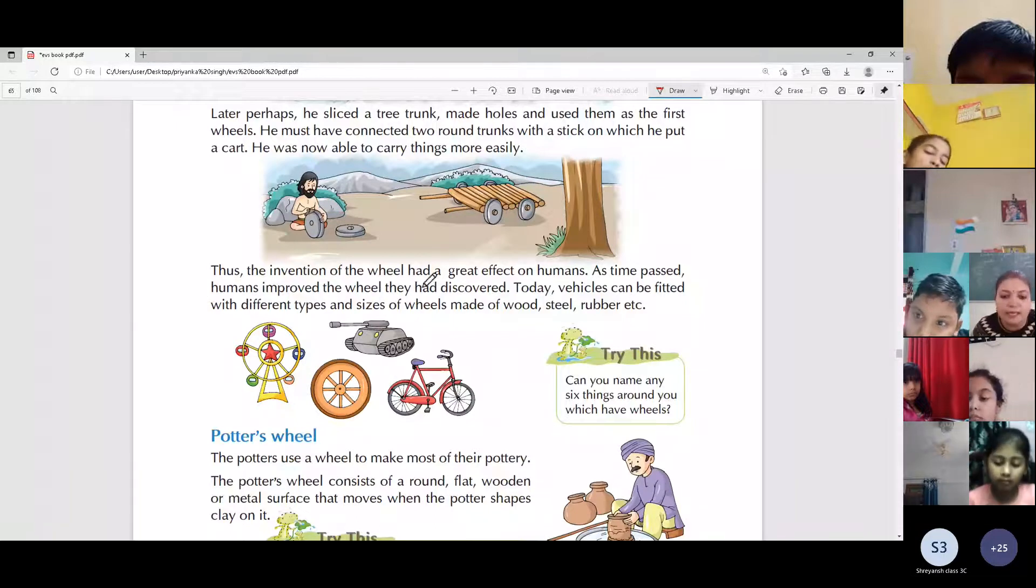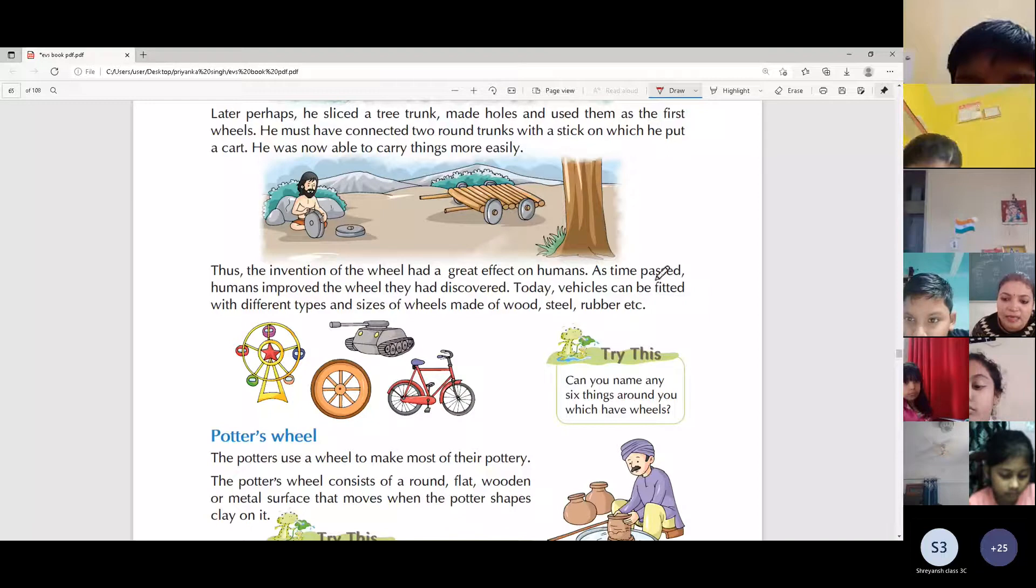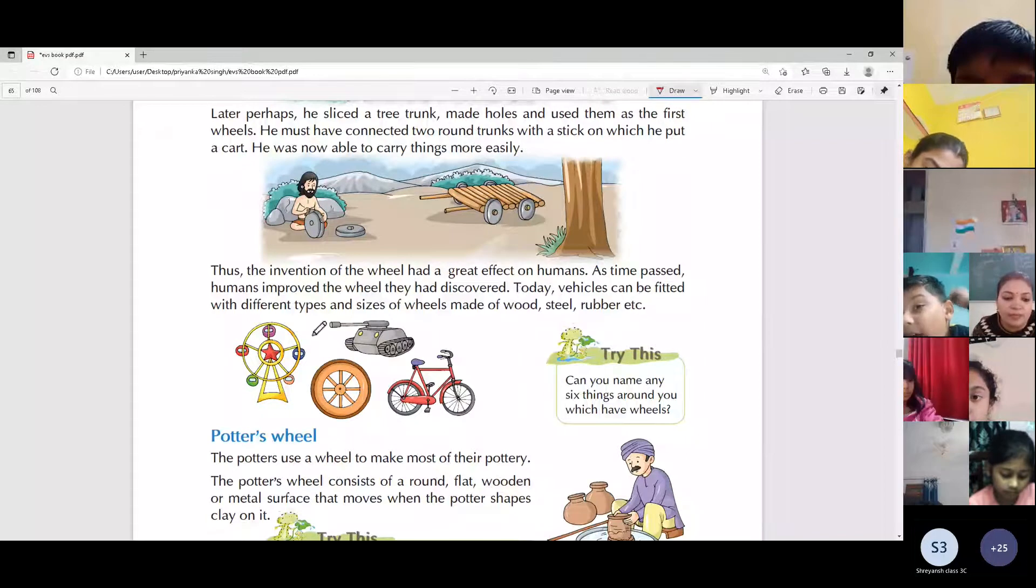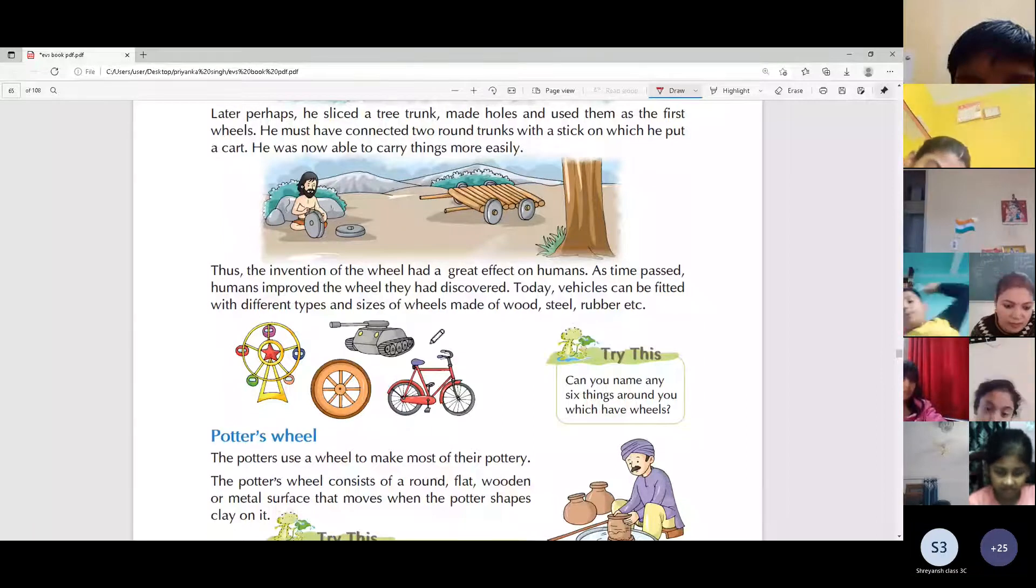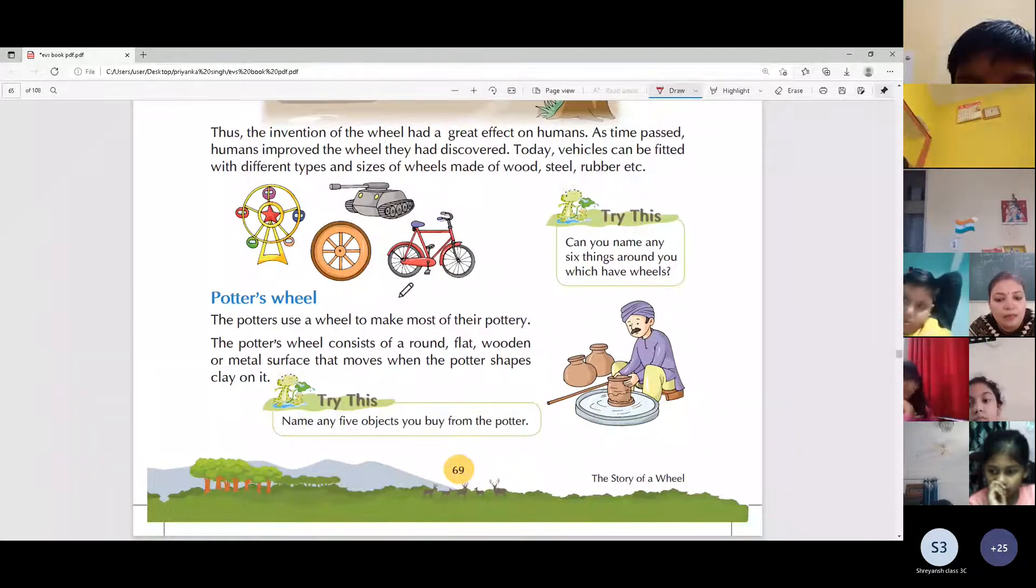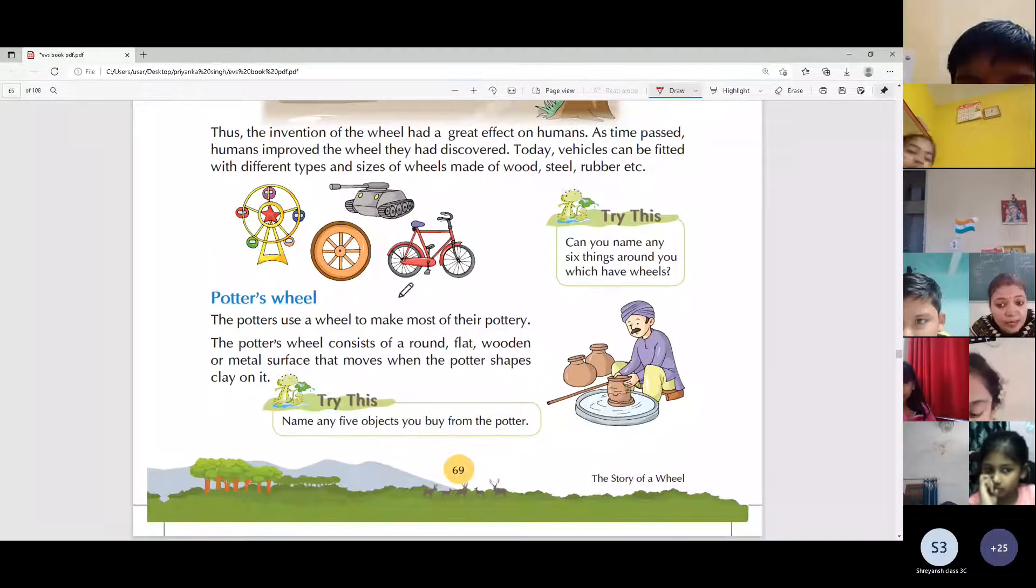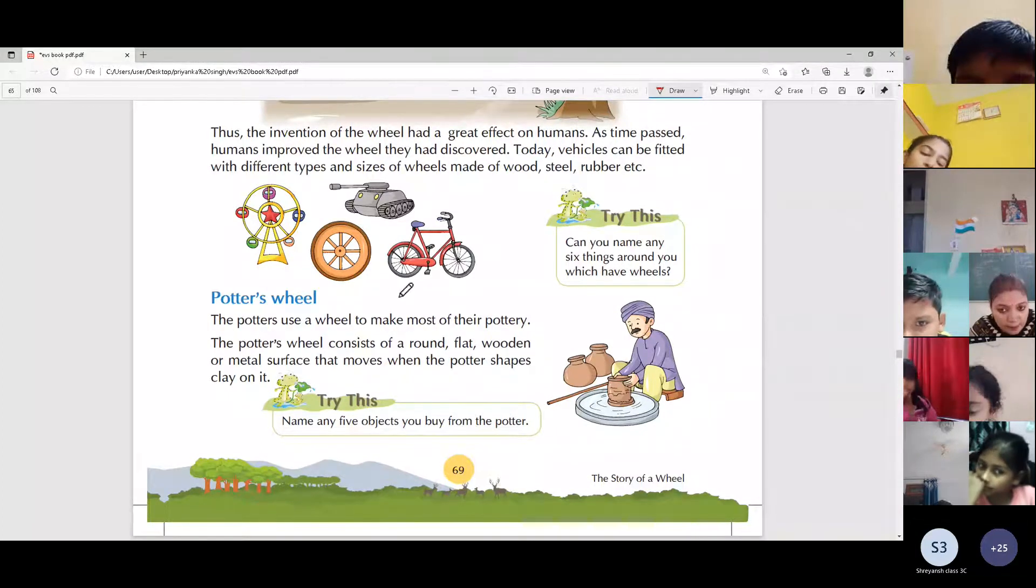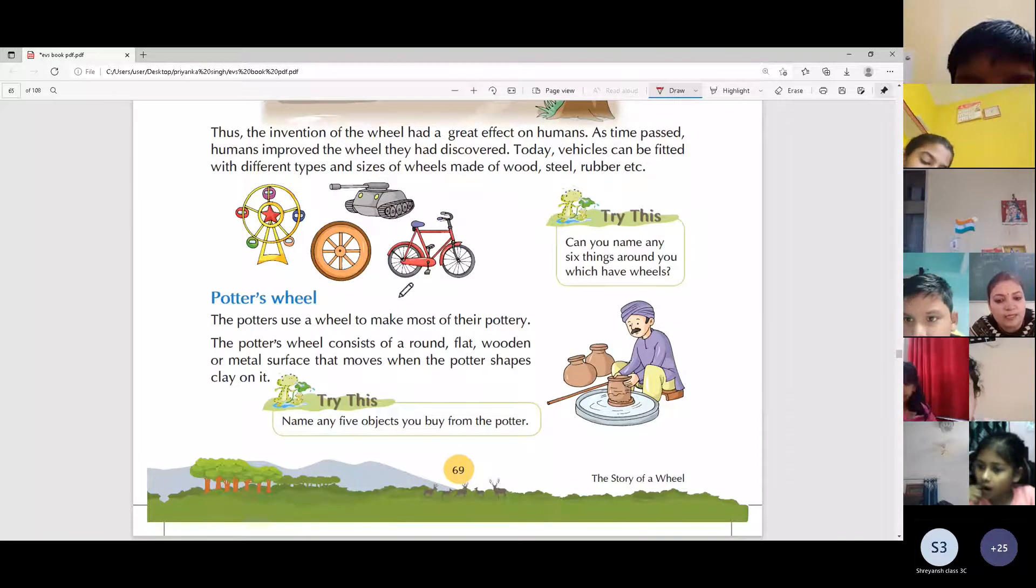Thus, the invention of the wheel had a great effect on humans. As time passed, humans improved the wheel they had discovered. Today, vehicles can be fitted with different types and sizes of wheels made of wood, steel, rubber, etc. You have seen that in your cycle. Rubber, steel, and iron. These three materials are used to make wheels for your cycle. Similarly, you will get wheels of wood. You can see it in the village.